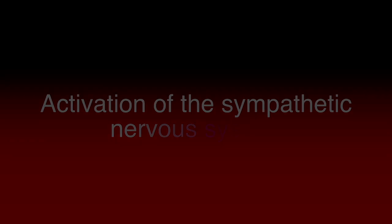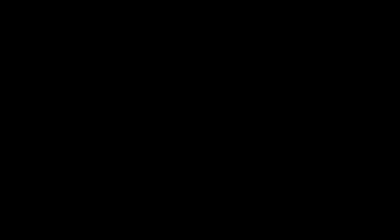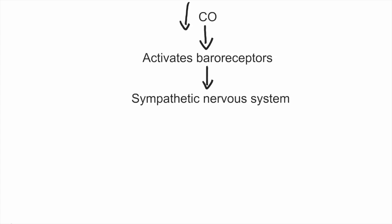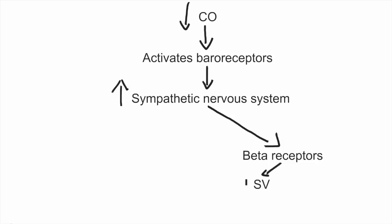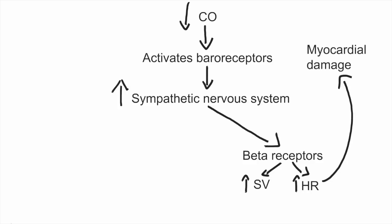Let's start by talking about the activation of the sympathetic nervous system. A decrease in cardiac output leads to activation of baroreceptors, which then leads to increased activation of the sympathetic nervous system. This has three main effects important in congestive heart failure. First is activation of beta receptors. Activation of beta receptors leads to increased stroke volume, as well as increased heart rate. Both of these serve to maintain cardiac output. However, in the pathologic state of congestive heart failure, further increases in heart rate and further work on the heart may cause further myocardial damage, which can therefore further exacerbate the problem of decreased cardiac output.